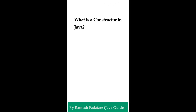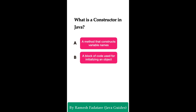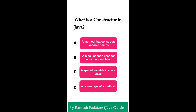Welcome to Java Quiz Series. Here is one more question: What is a constructor in Java? Option A: a method that constructs variable names. Option B: a block of code used for initializing an object. Option C: a special variable inside a class. Option D: a return type of a method. You have five seconds to answer this question.